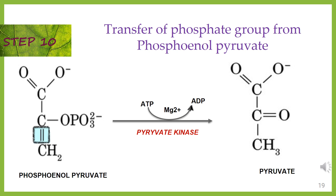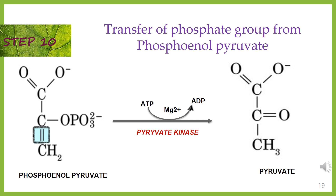Step 10: transfer of phosphate group from phosphoenolpyruvate. A phosphate from phosphoenolpyruvate is transferred to ADP to form pyruvate and ATP by the action of pyruvate kinase. Two molecules of pyruvate and ATP are obtained as the end products.